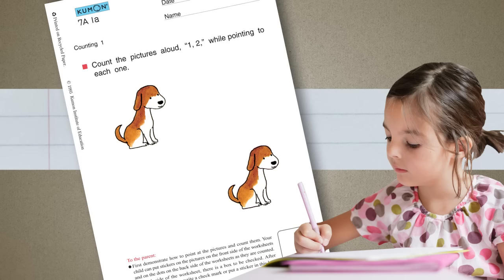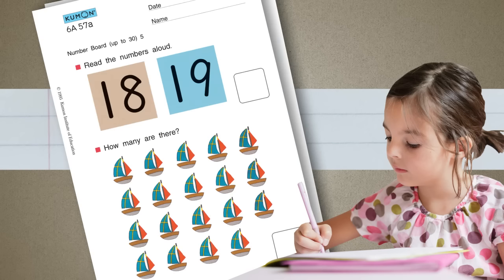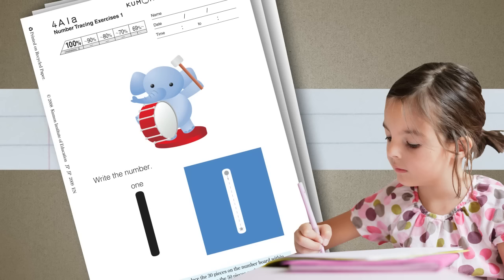In the early levels, Emily progressed from learning to count to learning the number sequence. She then developed the fine motor skills necessary to write numbers.